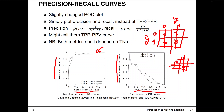The precision-recall curve does not depend on the true negative rate. Since we're plotting in 2D, we must choose which two metrics to show. There are usually three of interest — the fourth can always be computed from the other three. Especially in highly imbalanced situations, precision-recall curves might be the better choice.